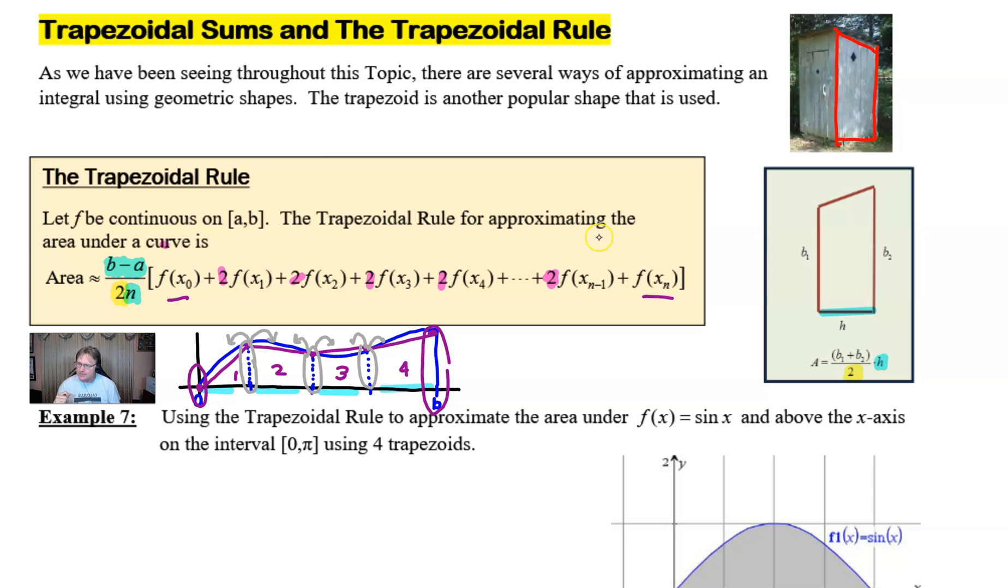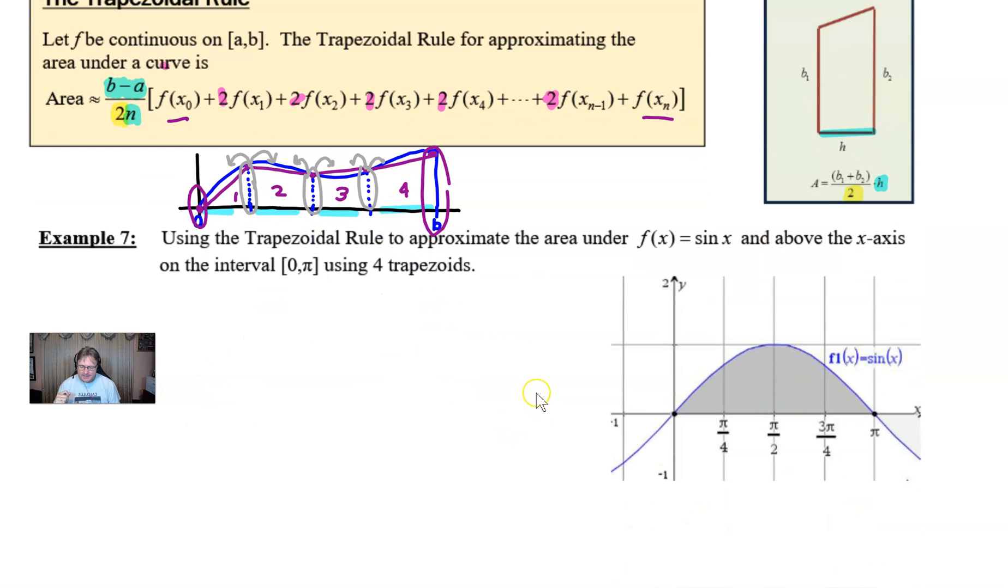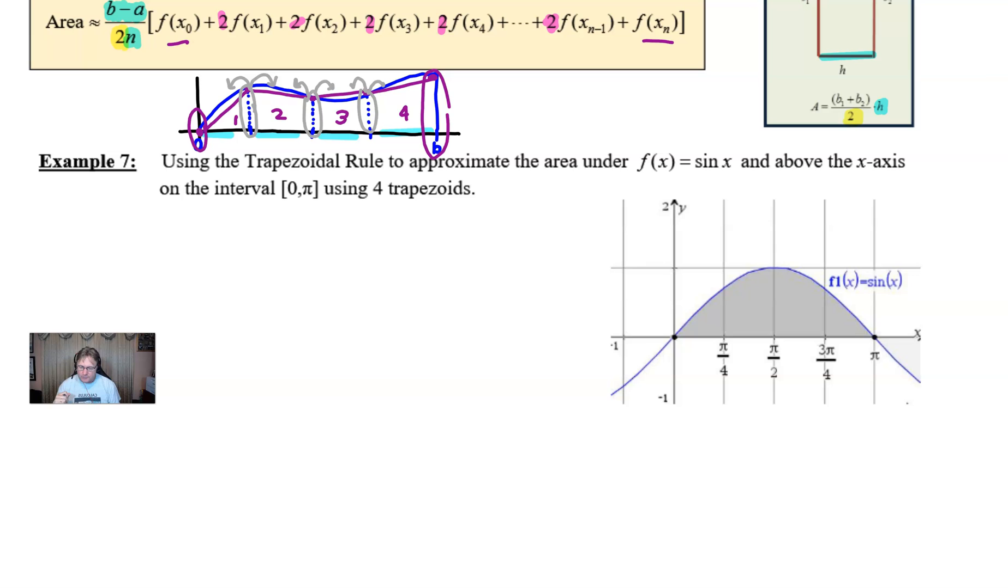So let's go ahead and take a look at an example here, number 7. It says, use the trapezoid rule to approximate the area under f(x) equals sine of x and above the x-axis on the interval zero to pi and it asks you to use four trapezoids. All right. And so you can see that the graph is already put together for us, which is kind of nice.